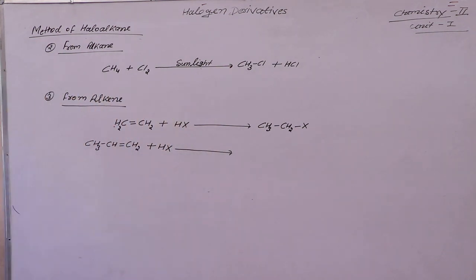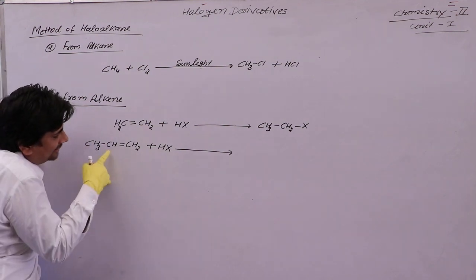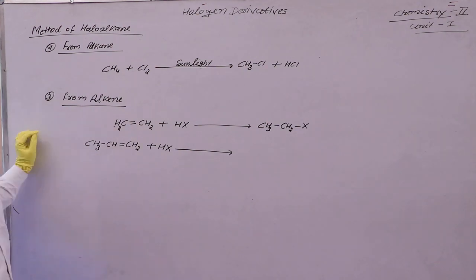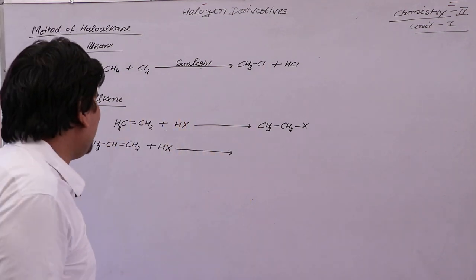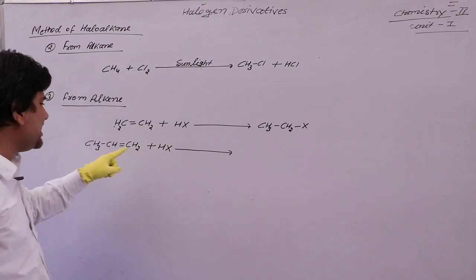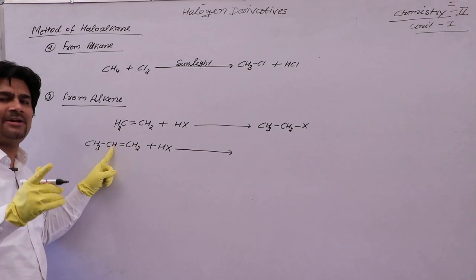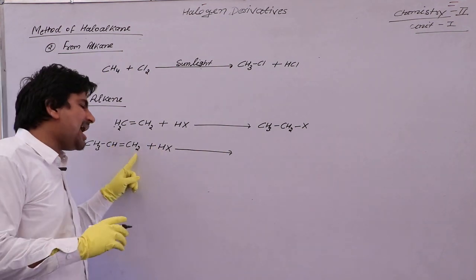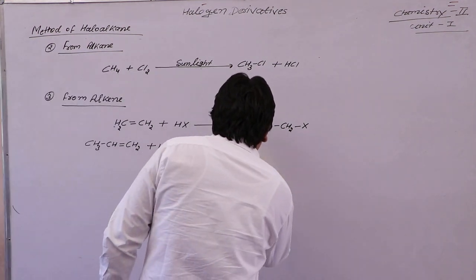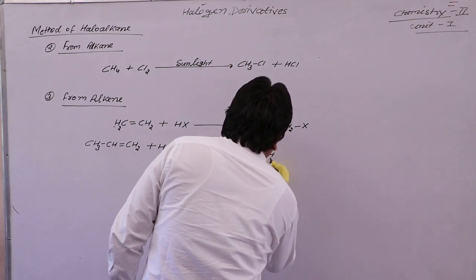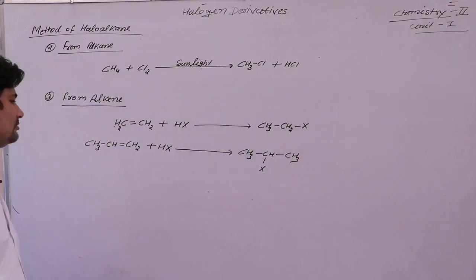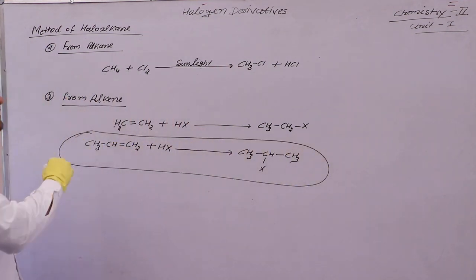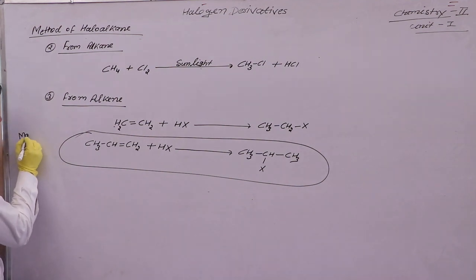For an asymmetrical alkene like CH₃CH=CH₂ reacting with HX, two products are possible. If H adds to one carbon and X to the other, or vice versa, different products form. The main product is the one where X attaches to the lower number of hydrogens on the double-bonded carbon, and H attaches to the higher number. The main product is CH₃CH(X)CH₃. This reaction is explained by Markovnikov's rule.